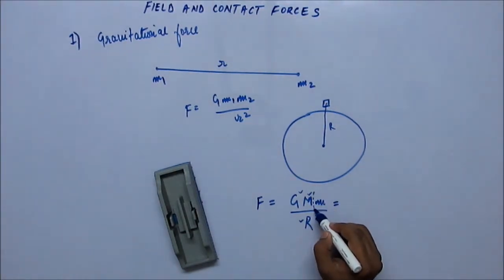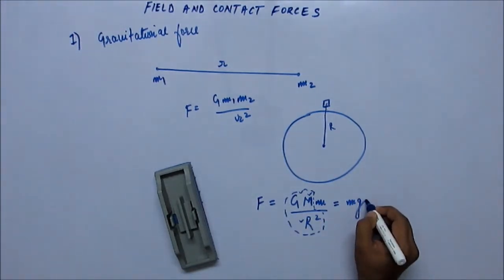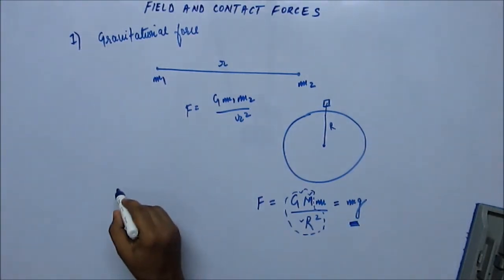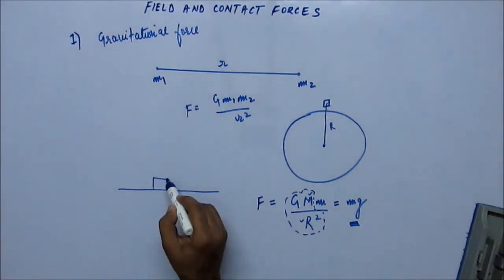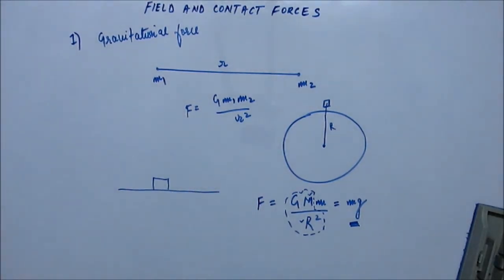So we can club these three constants together and write just one constant, small g. Force due to Earth, the force of gravitation due to Earth on a mass m, we represent as mg. In most cases, in almost all cases, we'll have a block or any other body having some mass.